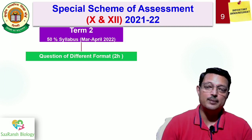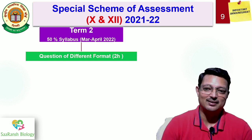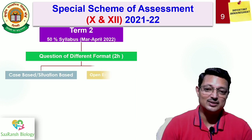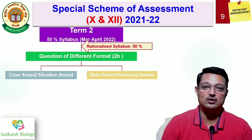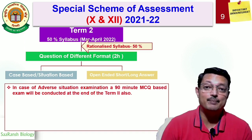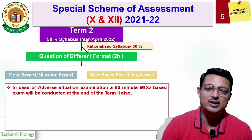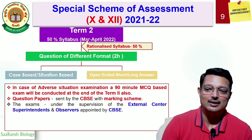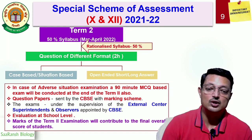Term 2 will be based on 50% of the syllabus and its examination will be in March-April 2022. Assuming conditions get better, the question paper format will not be MCQ — it will have case-based, situation-based, short answer, long answer, and open-ended questions. If conditions are adverse, CBSE may again go for a 90-minute MCQ-based examination. The question paper will be sent by CBSE, and evaluation will be at school level. Marks of term 2 will contribute to the final overall score.